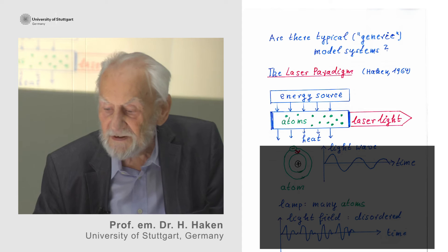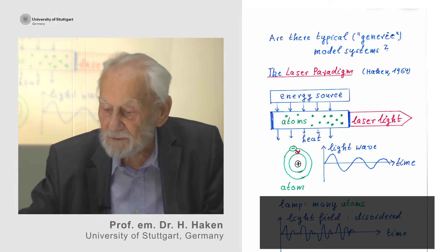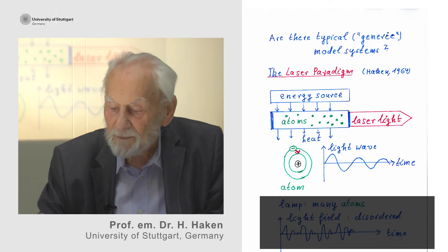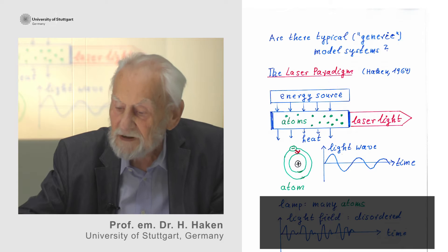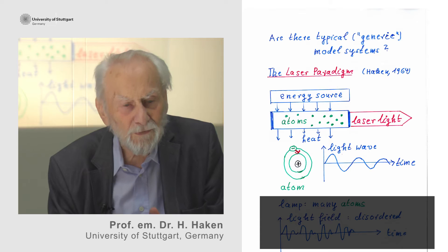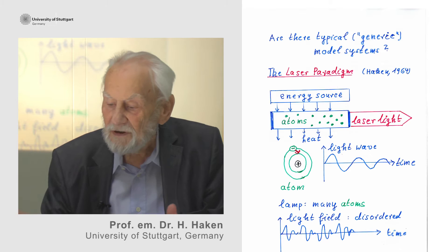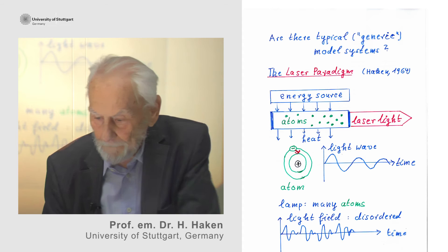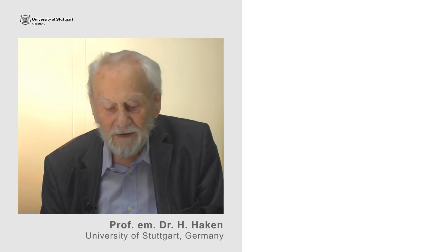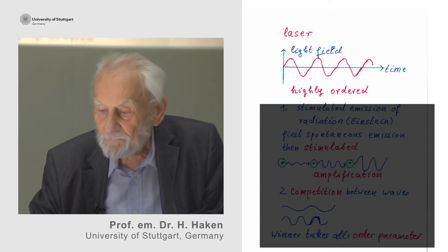Simultaneously, heat also is produced. Now let us look into this process in a little more detail. An atom is composed of its nucleus and an electron that runs around on specific orbits. After being excited to a higher orbit, the electron will spontaneously go over to the lower orbit, where it emits a light wave — it is as if we are throwing a pebble into water. In a lamp, there are many individual atoms, and they produce individual light waves that are entirely disordered. Strangely enough, in the laser, an entirely new kind of light is emitted: a highly ordered light wave.